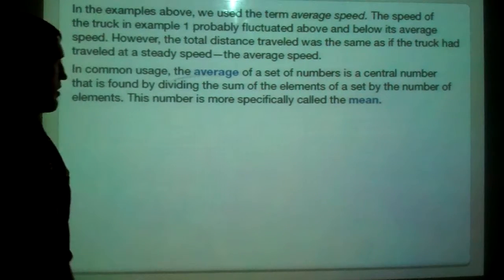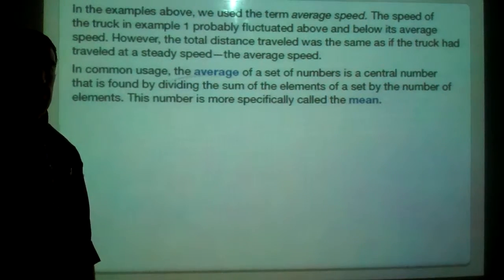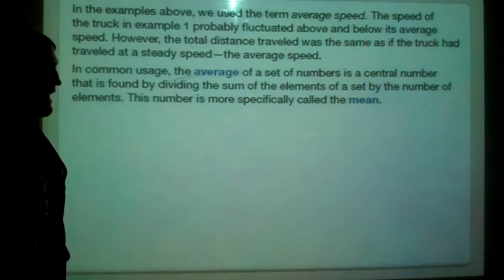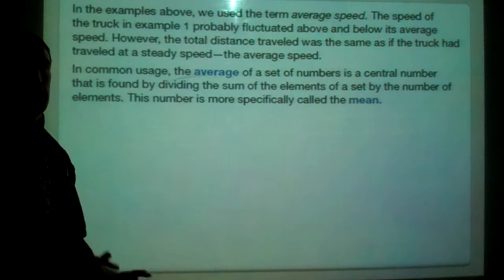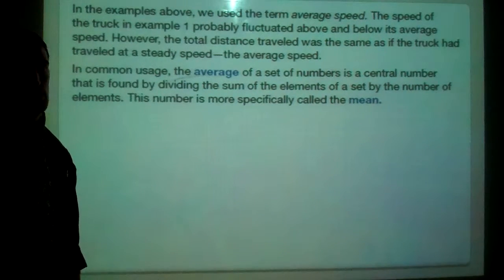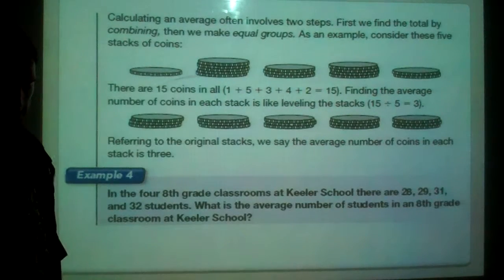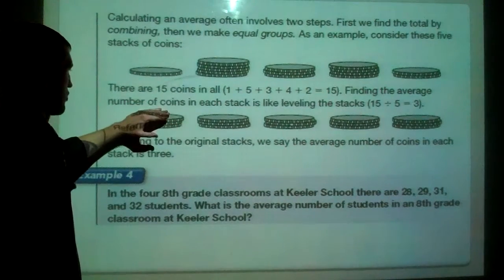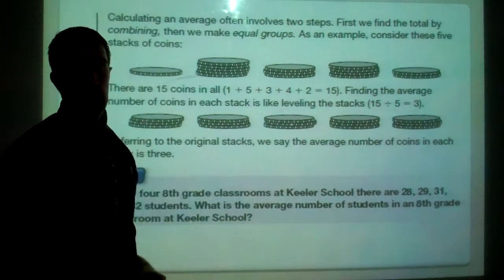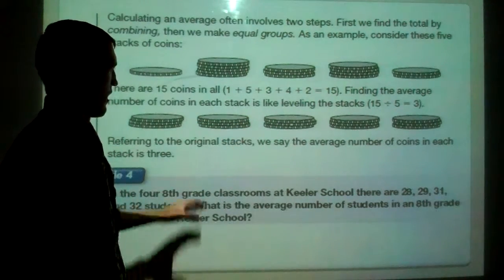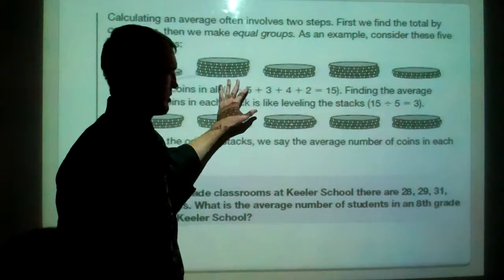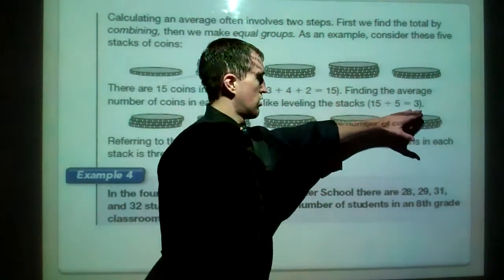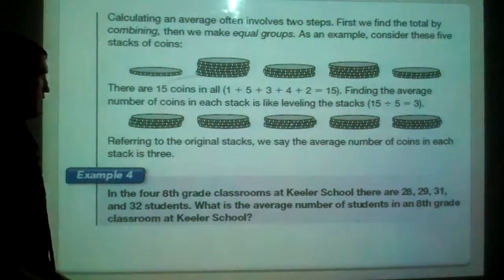All right. Moving on here. I mentioned mean before. Average is the same thing as mean. These two words mean the same thing. And what that means is we're going to add up a set of numbers and then divide by how many numbers there are to see what our average or mean is. It's kind of like this coin situation. If we have 15 coins, we find the average number of coins in each stack is like leveling them. So we want each pile to be the same level. If we add everything up, we'd get 15 coins. And there are 5 groups of coins that we want. So average number would be 3 in each pile.